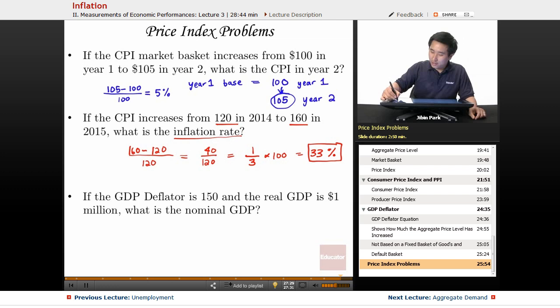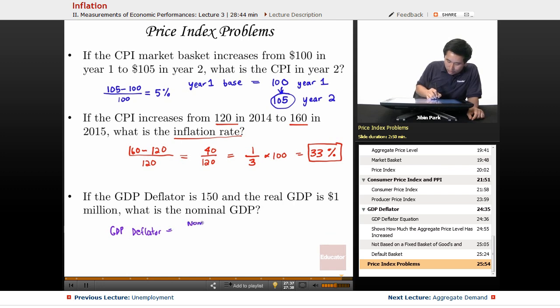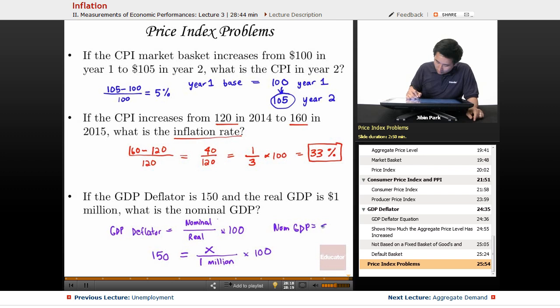Real GDP deflator here. The GDP deflator formula equals nominal over real times 100. If the GDP deflator is 150 and the real GDP is $1 million, then what is the nominal GDP? Let's say the value is x times 100. You multiply this out and x, the nominal GDP, equals $1.5 million.